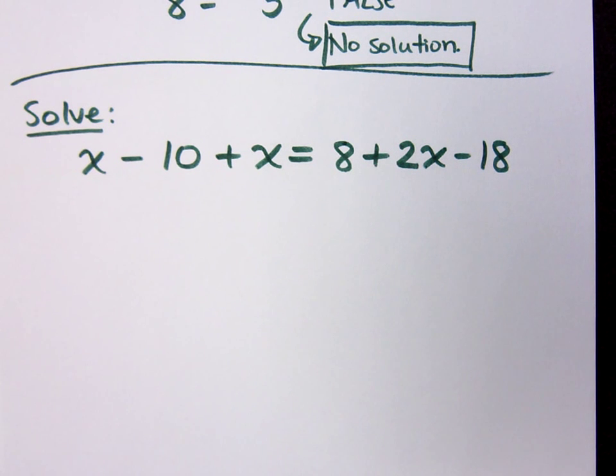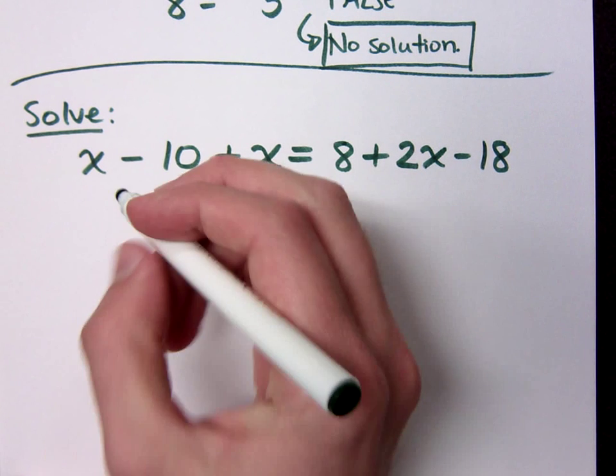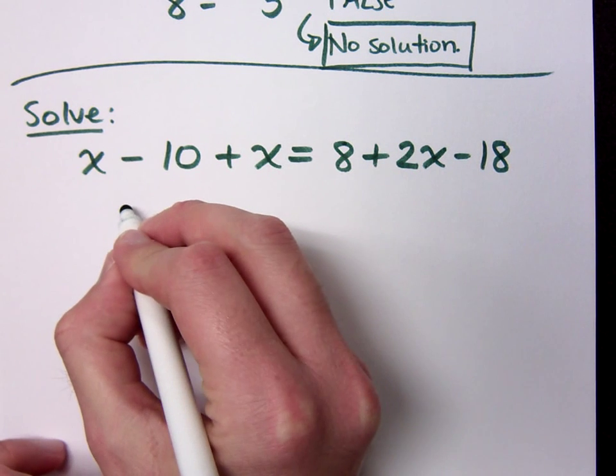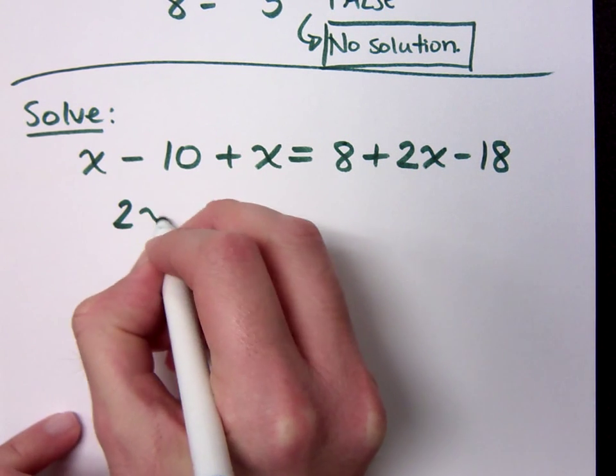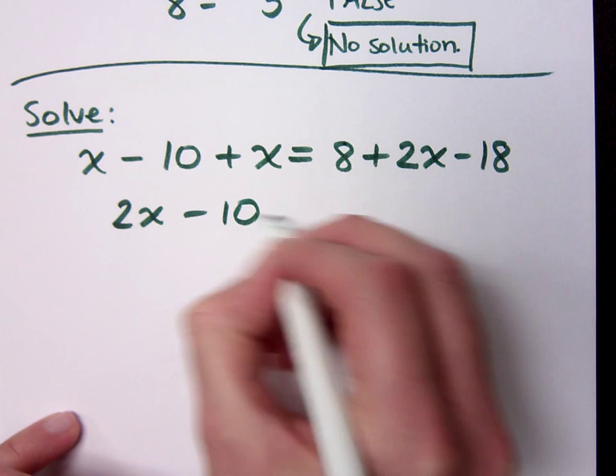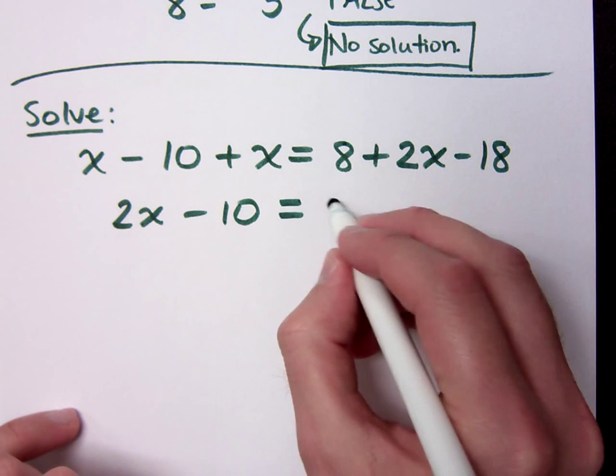What do you got? What are you going to do? Cancel everything. Combine like terms. Let's combine like terms. So what do I get when I combine like terms here? 2x minus 10. 2x minus 10 equals what? 2x minus 10.